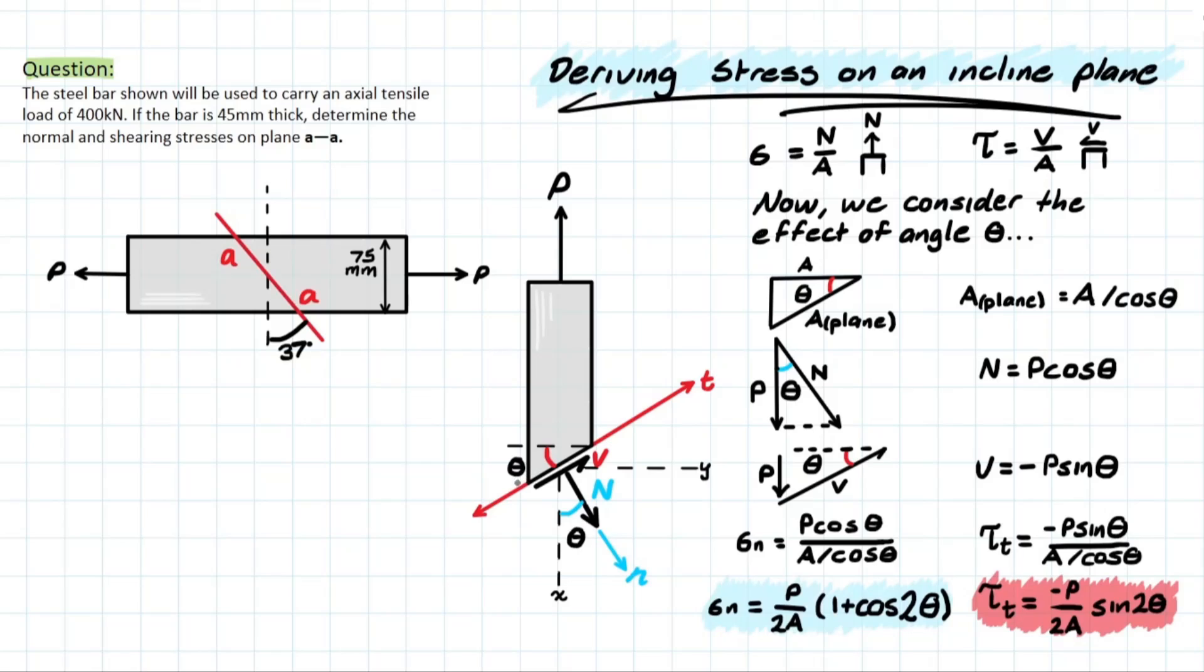So this in turn generates the need to break down the load forces into components that are parallel and perpendicular to the plane. And this will give us the respective shear, which is this force represented in V, along the transverse axis t, and the respective normal force N along the normal axis represented by lowercase n.